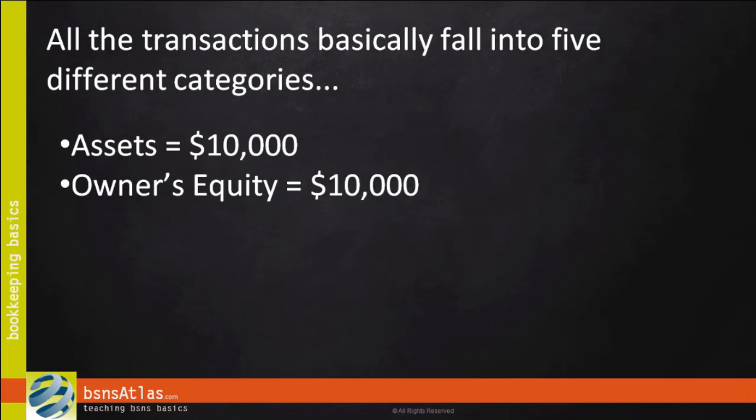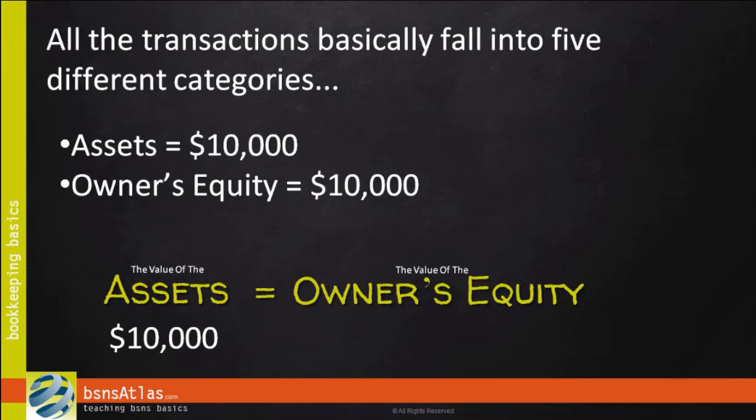The value of all the assets combined must equal who owns it. So, everything the company owns is owned by the owner. The assets equal the owner's equity. Equity means ownership for us.